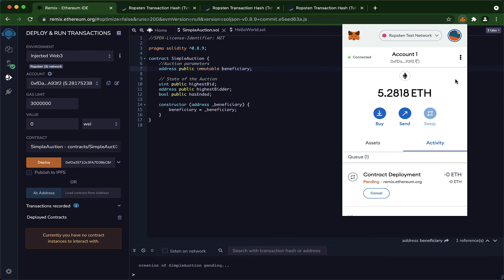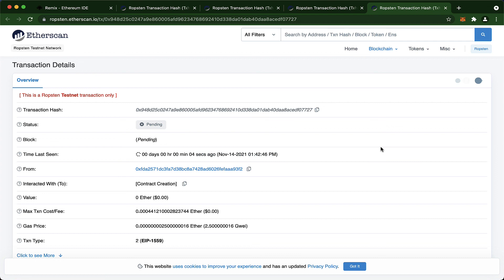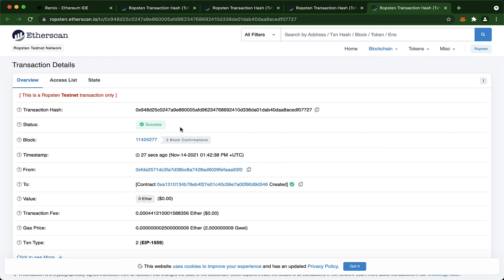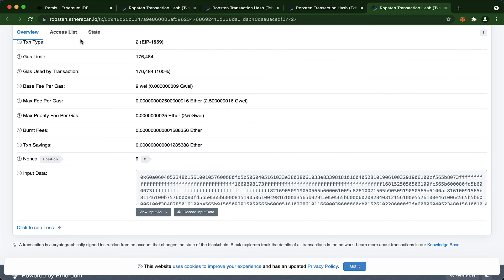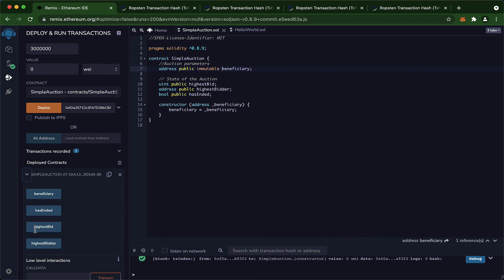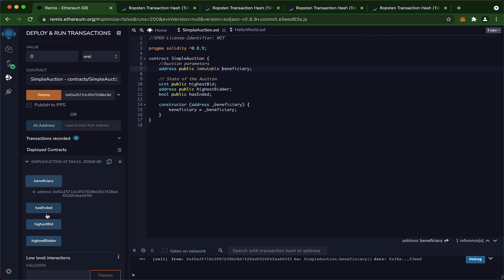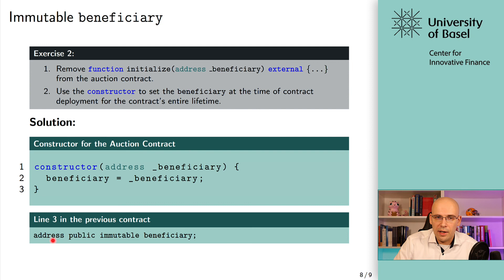We wait until the transaction gets confirmed — and that's the case, we have a success. Down here you can see the data, although it's not easy to read right now because it's bytecode. As expected, the beneficiary, when you click on it, has been set as part of deployment to the specified address, whereas everything else is at default value. For your reference, you also have the solutions on the slides: the constructor takes an address parameter underscore beneficiary and sets the beneficiary state variable equal to it. And on line three of the contract, address public immutable beneficiary — so you set the beneficiary as immutable. That is the entire current state of the auction contract.